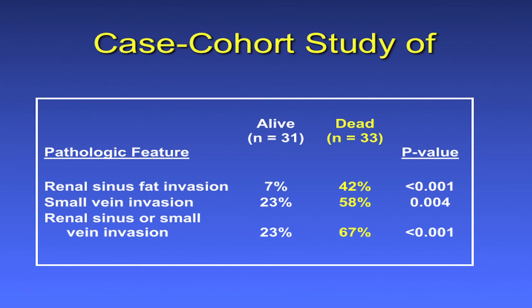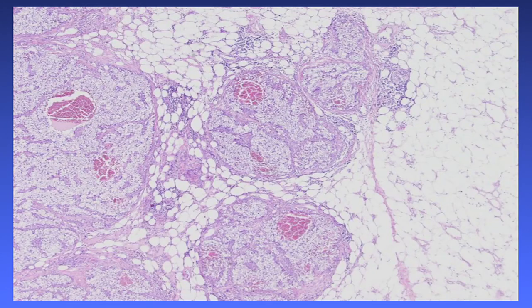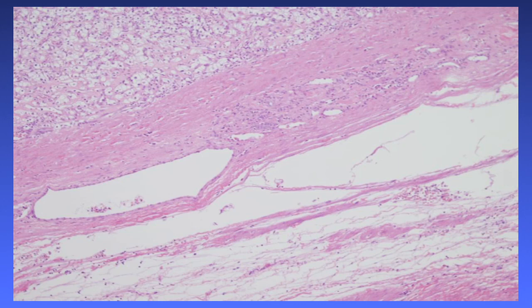Dr. Bonsib argues that T2 tumors don't really exist — that if you sample the renal sinus fat in very large renal cell carcinomas, you'll nearly always find fat invasion, making those patients always pT3, not pT2. Here are photomicrographs of the various patterns of renal sinus fat invasion. Note that when a renal cell carcinoma has a capsule in close interface with renal sinus fat, that is not invasion — it can push into it without invading.